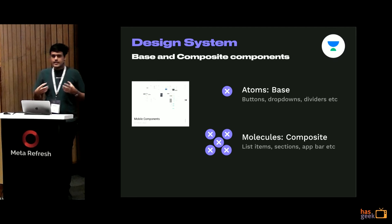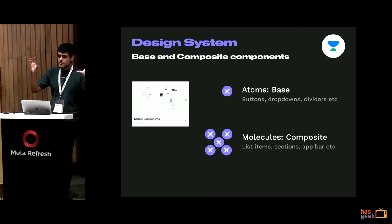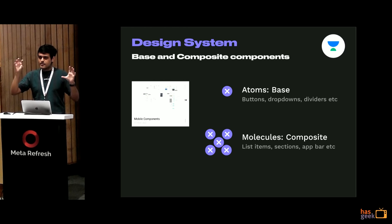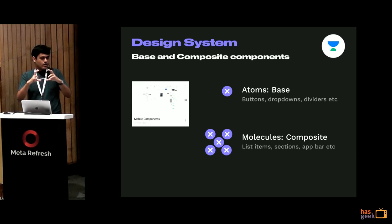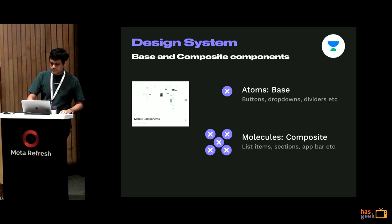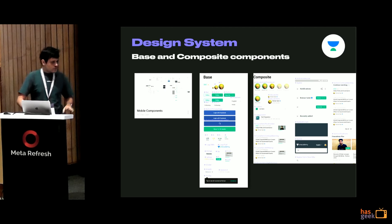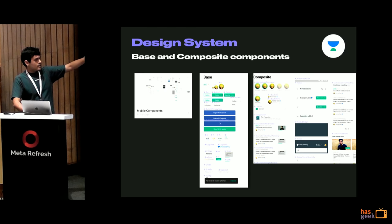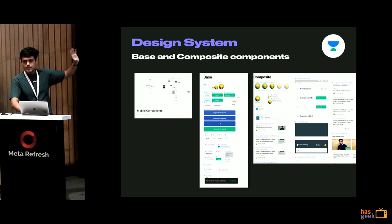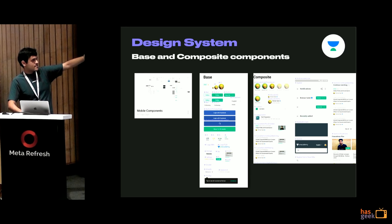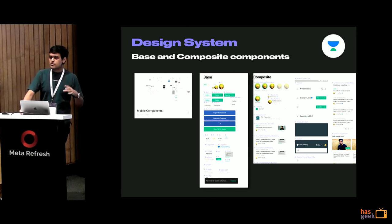The way we structured our components follows the atoms and molecules approach. Atoms are the smallest repeating elements — things like buttons, dropdowns, dividers. Molecules could be list items, full sections in your app, or the app bar — common Android and iOS elements. Our main component file has all the base and composite components arranged clearly. At any point, a developer can come here to see what primary buttons look like, their pressed state, or their loading state. The development team also has their own documentation once they build it.